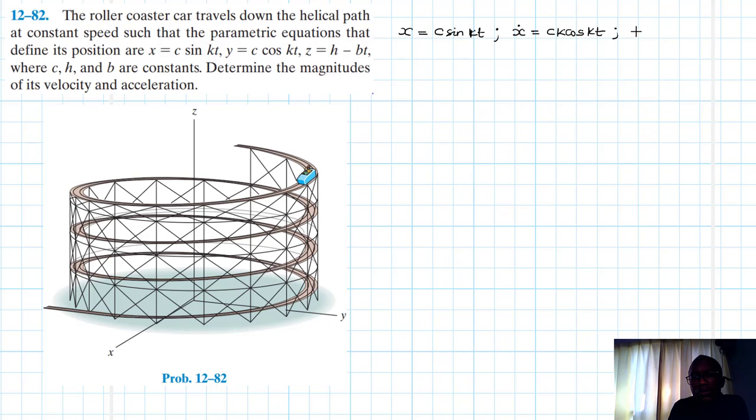And the double derivative, the second derivative, this just becomes -ck² sin kt.